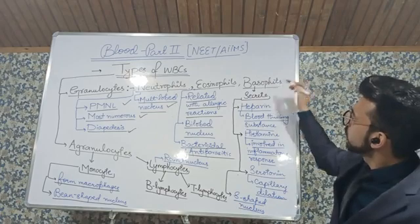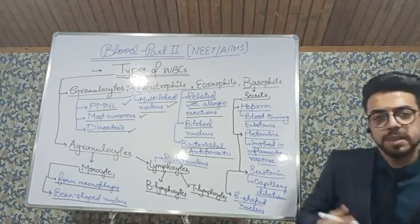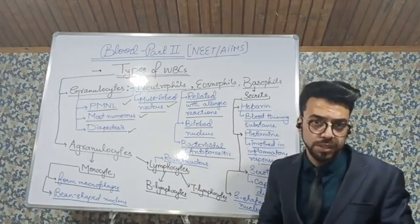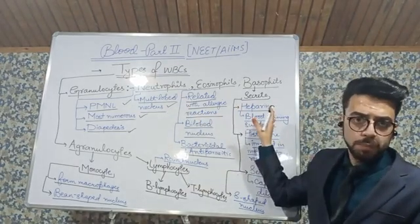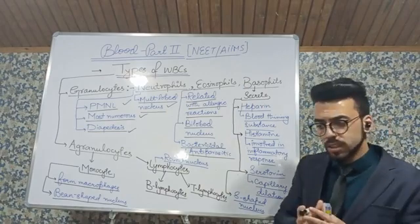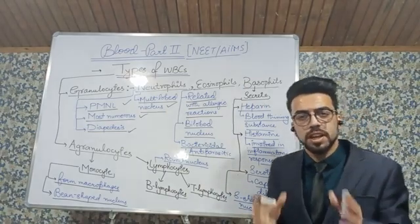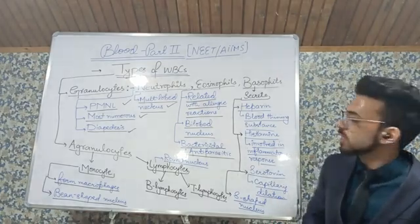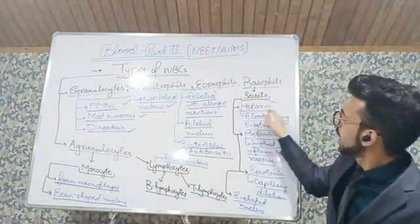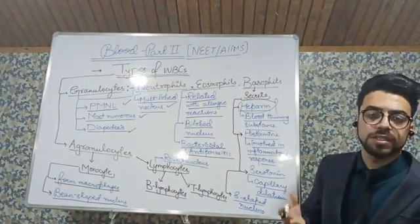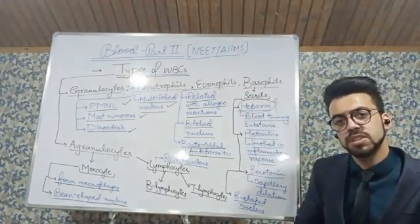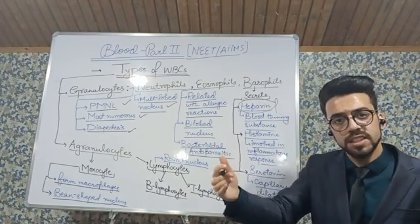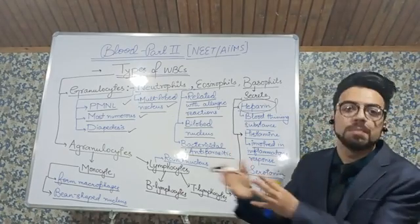Now we move on to basophil. Basophil is a very important WBC cell with wide function — it actually secretes three kinds of chemicals. The first one is heparin. Heparin, in simple words, is a blood-thinning substance; it works against blood clotting.